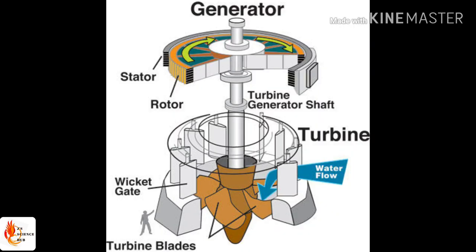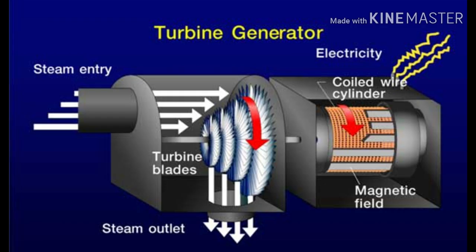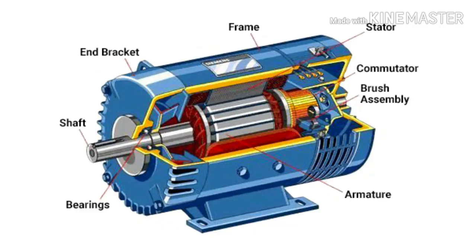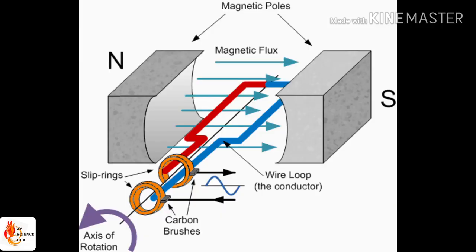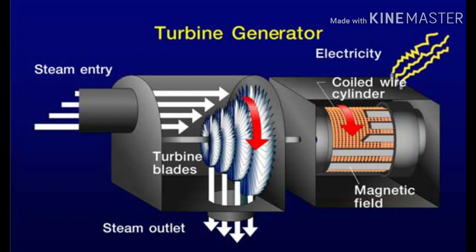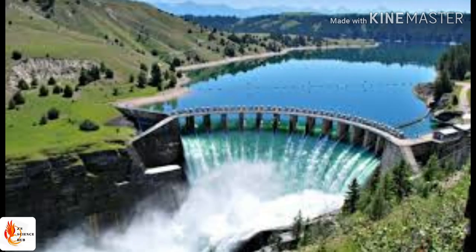Due to the rotation of the turbine, the generators connected to them also rotate, and this generates electricity. Electricity is produced when kinetic energy turns copper coils or wire within the turbines. A key part of most electric power plants is the generator — a device that turns rotary motion into electricity. Inside the generator, coils of copper wire spin inside a strong magnetic field, and as the coils move, the magnetic field creates the flow of alternating current in the wire.